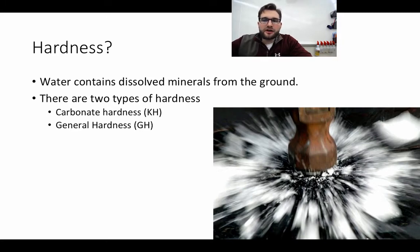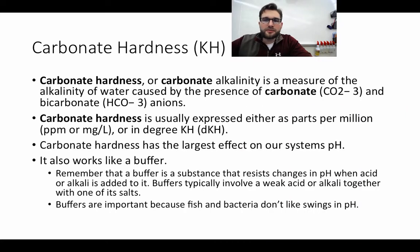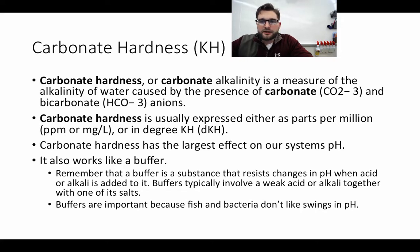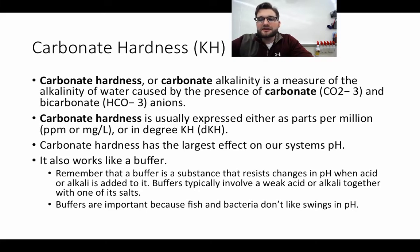There are two types of hardness: carbonate hardness and general hardness. Carbonate hardness, or carbonate alkalinity, is a measure of the alkalinity of water caused by the presence of carbonate and bicarbonate. It's usually expressed in parts per million or milligrams per liter. It's our largest effect on our system's pH, and it's also going to work like a buffer — maintaining our overall pH as nitric acid is added, keeping the system from dropping drastically. We don't want major swings in pH, as those are going to lead to fish death.